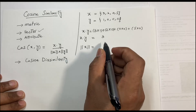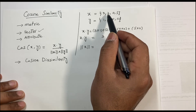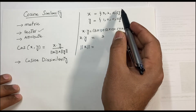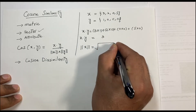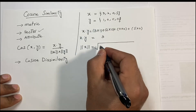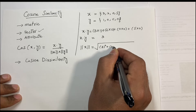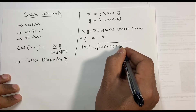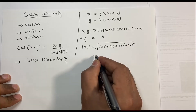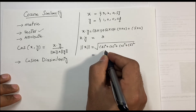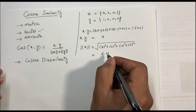Now we have to find the length of x. We take the square of each value, add them, then take the square root: square of 3, plus square of 2, plus square of 0, plus square of 5. The answer is 6.16.